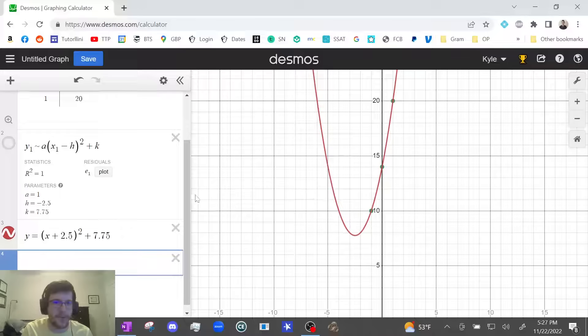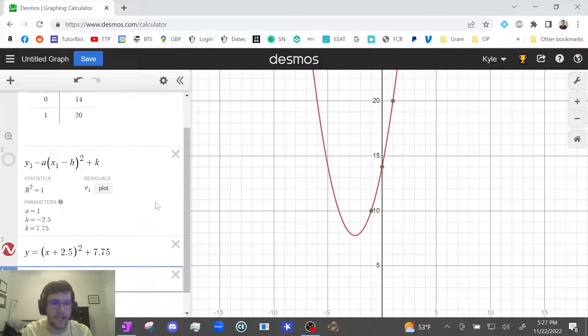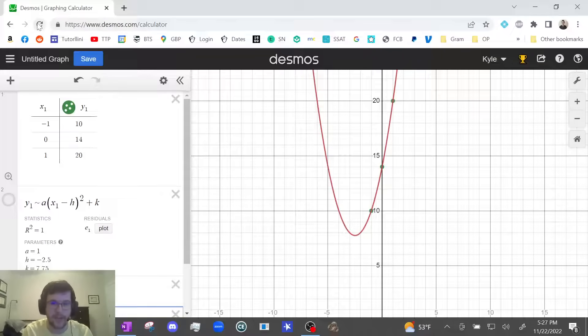So you see I just found the vertex form really quickly. And maybe that could be helpful for another question that's kind of like this, or maybe for a word problem where you have to have a projectile quadratic and you have to find the vertex form of it from two points. That could be super helpful. I couldn't find a question like this using vertex form, but there is one in the sample questions that illustrates how powerful this can be and how helpful this can be. And I'm going to do that with you guys right now.